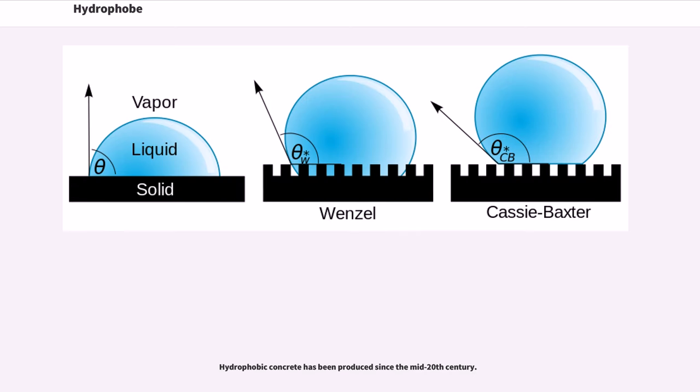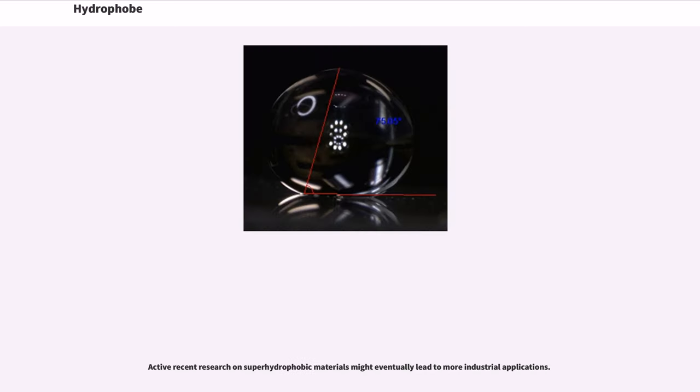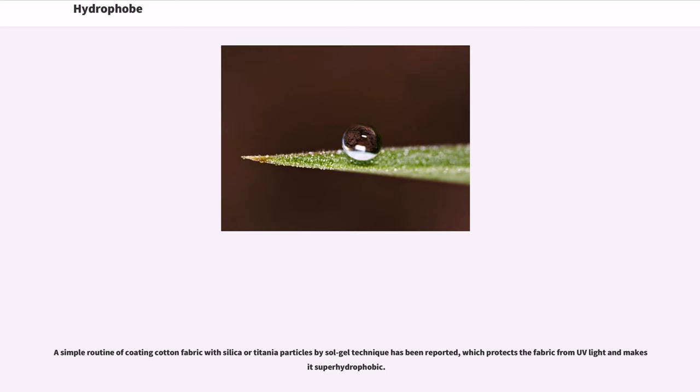Hydrophobic concrete has been produced since the mid-20th century. Active recent research on superhydrophobic materials might eventually lead to more industrial applications. A simple routine of coating cotton fabric with silica or titanium particles by sol-gel technique has been reported, which protects the fabric from UV light and makes it superhydrophobic.